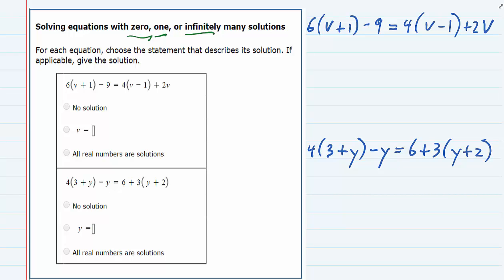First of all, if we just have one solution, it's going to look like this. We will have the variable equals some number, so I'm just going to put v equals some number. It's a normal sort of solution, what you would expect when you solve an equation. And if you get that, then that would be one solution.